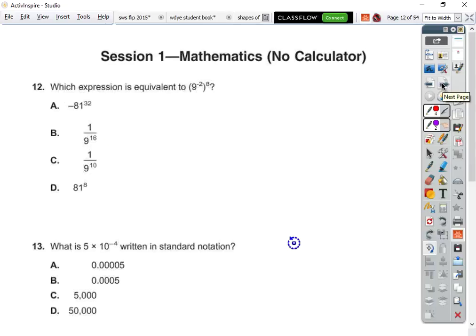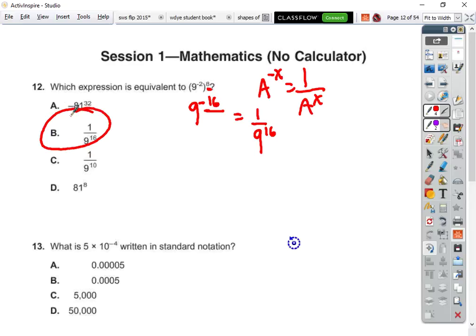D. Which expression is equivalent? So first things first. We know that we have to multiply, when you have an exponent outside the parentheses, you have to multiply exponents. So we have nine to the negative sixteen. But you're not allowed to have nine to the negative sixteen. You can't have a negative exponent. And we know that a to the negative of x power is equal to one over a to the positive x power. So this has to be equal to one over nine to the sixteenth. B. Yay!